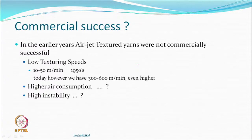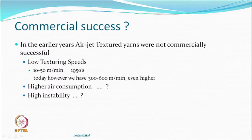The texturing speeds were very low — around 10 meters per minute was what they were able to produce. Even at the worst of times, false twist texturing machines were running at more than 150 to 200 meters per minute. So you have a beautiful filament yarn and you want to do texturing, but it is going to take so much time — meaning the speed is very slow.